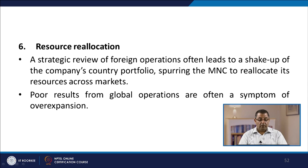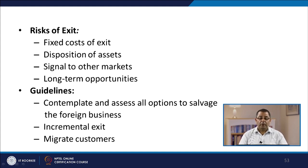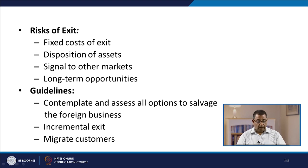Resource reallocation: a strategic review of foreign operations often leads to a shakeup of the company's country portfolio, spurring multinationals to reallocate resources across markets. Poor results from global operations are often a symptom of over-expansion. The risks associated with exit are the fixed costs of exit — invested money goes to waste — and difficulty in asset disposition where the company may not get the right valuation. Exiting also sends a bad signal to other markets that the company is not there to stay, sacrificing long-term opportunities. Guidelines to overcome this include contemplating all options to salvage the situation, doing an incremental exit, and migrating customers.